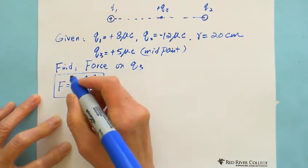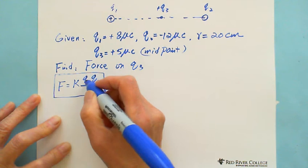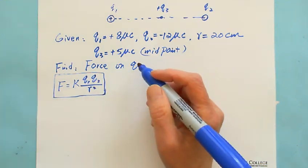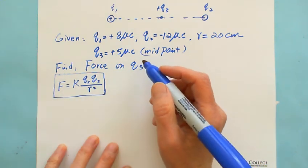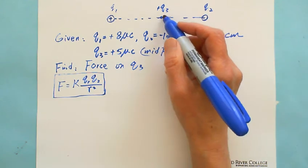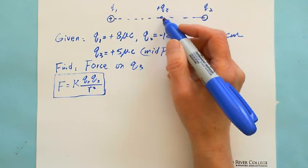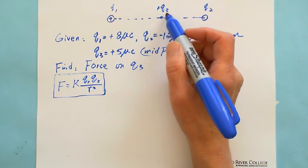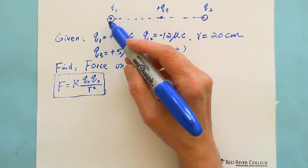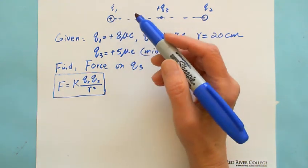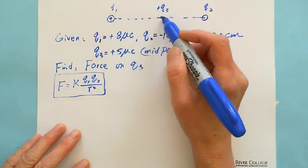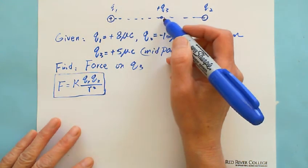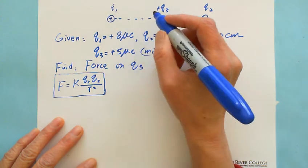Here, the Q1 and Q2 in the formula indicate two charges. Now applied to this question, you're looking for the force on Q3. We need to consider what is the force acting on Q3 from Q1. Because Q1 is positive and Q3 is also positive, they repel each other.